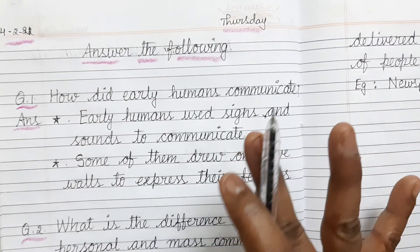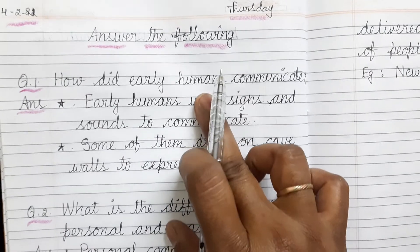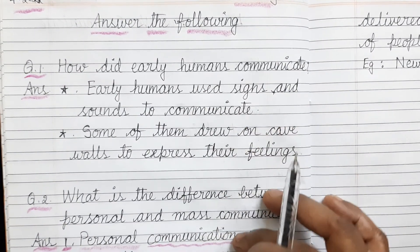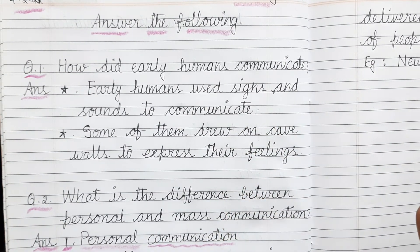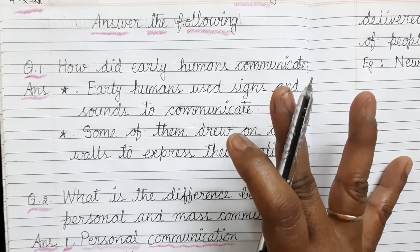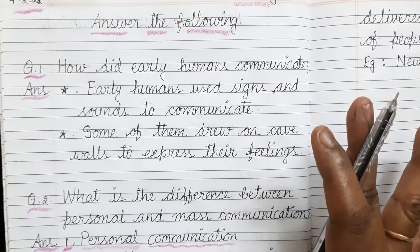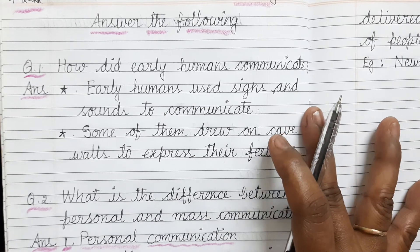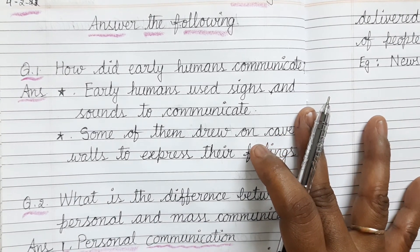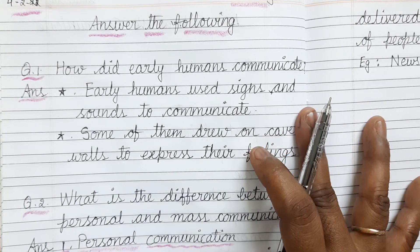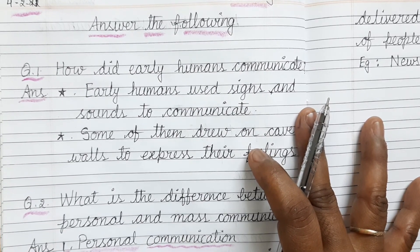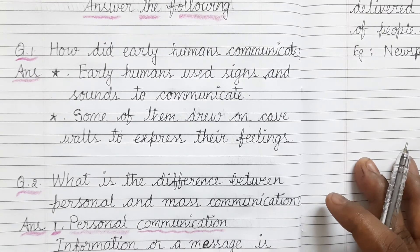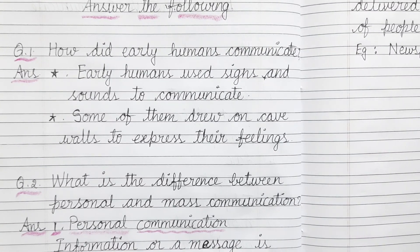Children, today you have to complete these two answers — question one and two — neatly in your classwork with neat handwriting. Present it the same way I am presenting. The remaining questions, answers, and activities I will give tomorrow. Tomorrow I will give the remaining notes. Please complete this in your classwork. Thank you, bye-bye.